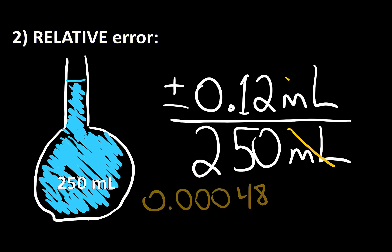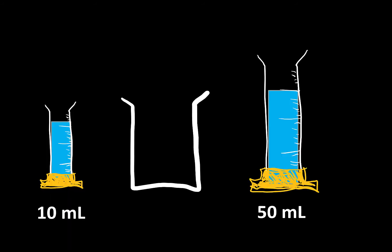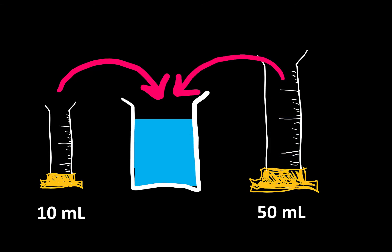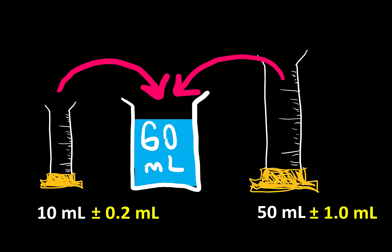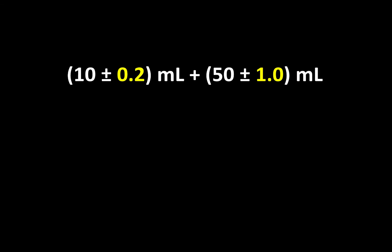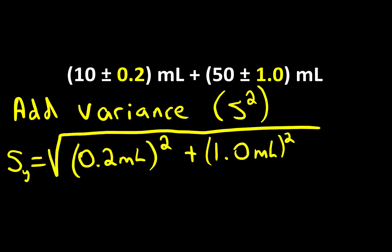A relative error value of 0.000048 is a fraction; multiply by 100 and you get a percent. As a simple example of error propagation: say I have two different volumes and I'm combining them. Each initial volume has an uncertainty. The rule for addition or subtraction is that we add the variances — the variance is the standard deviation squared — then take the square root to get the final standard deviation.